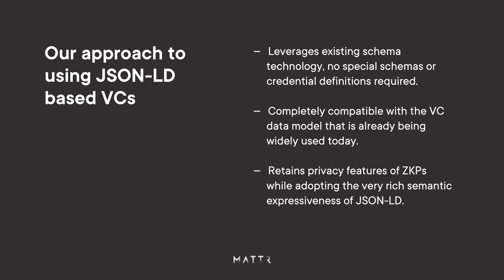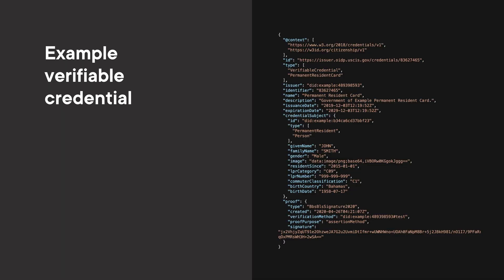As a consequence, this is completely compatible with the VC data model as widely used today. What we get on top is retaining the privacy features, plus the ability to take an assertion from an issuer and derive an infinite number of zero knowledge proofs from it, selectively revealing information from the original assertion.